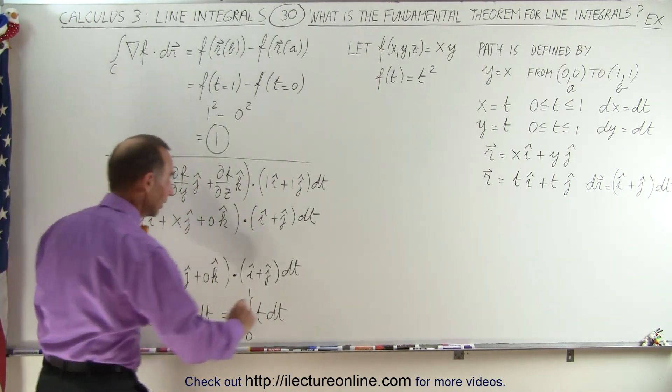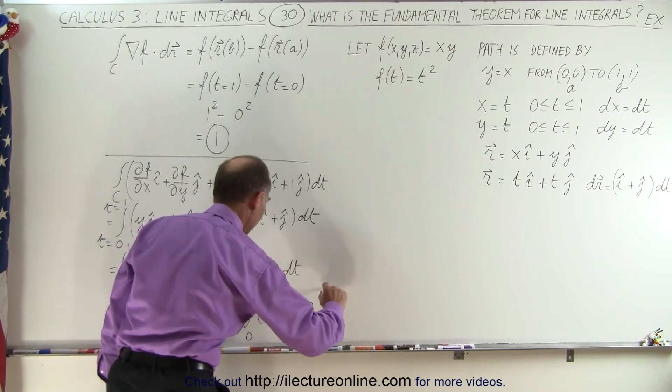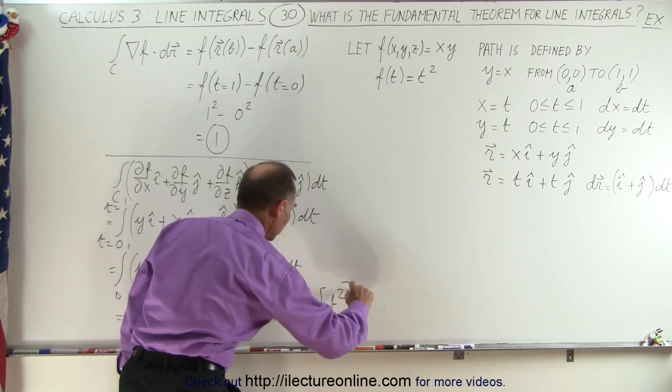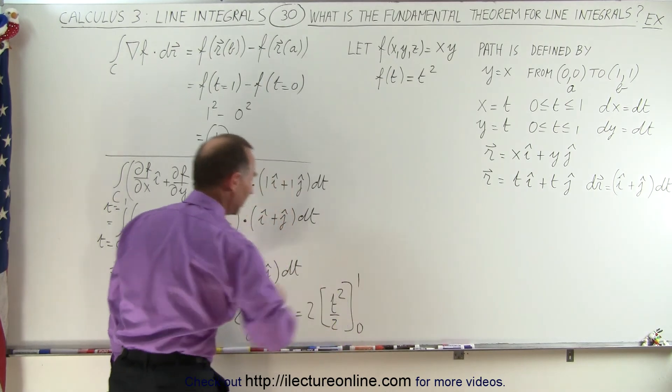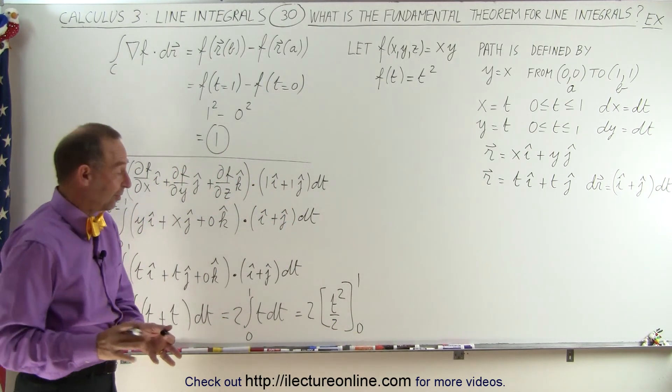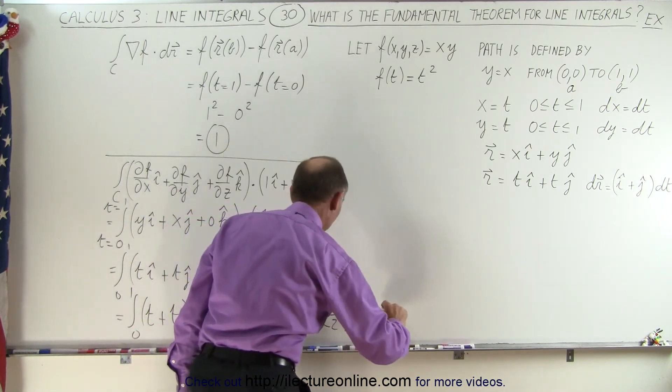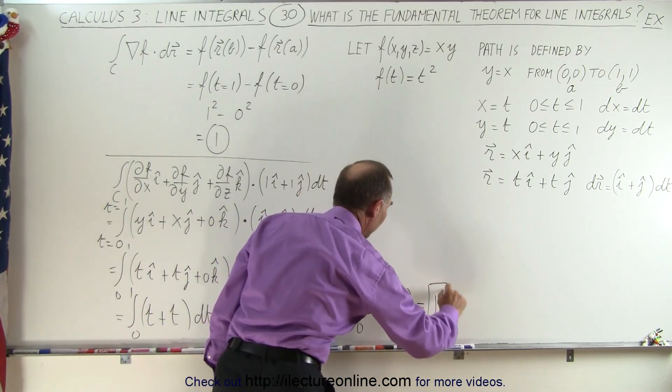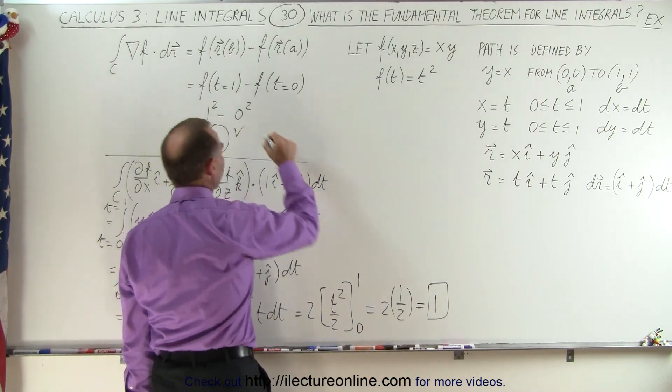So now we go ahead and integrate that, so this becomes 2 times t squared over 2 from 0 to 1. Plug in the upper limit, well, plug in the lower limit, we get 0. Plug in the upper limit, we get 2 times 1 half, which is equal to 1, which is the same answer that we got up there.